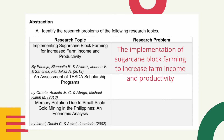Try to identify the research problems of the following research topics, found in the abstraction portion. On the first column, you have the research topics and the names of their authors. Place your answers on the second column under 'research problem.' For the first item — Implementing sugarcane block farming for increased farm income and productivity, by Pantoja Blanquita R., Alvarez Johan V., and Sanchez Flordeliza A. (2019) — the research problem is the implementation of sugarcane block farming to increase farm income and productivity. When you have your research topic, it is easy to identify your research problem, even without much background on the specific topic.